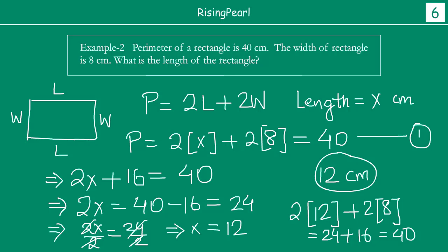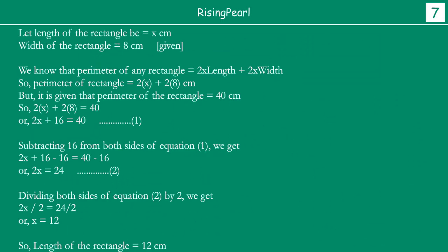Now we will look at our last example from webisode 1. But before that, when you do example 2 on paper, you need to write it systematically. Let length of rectangle be x, width of rectangle is 8 centimeters (given). We know perimeter of any rectangle equals 2 times length plus 2 times width. So perimeter equals 2x plus 2 times 8. It is given that perimeter is 40, so 2x plus 16 equals 40. We write this as equation 1.